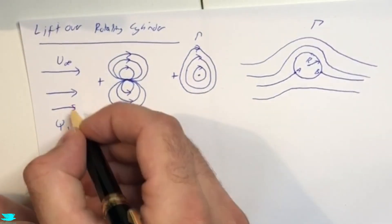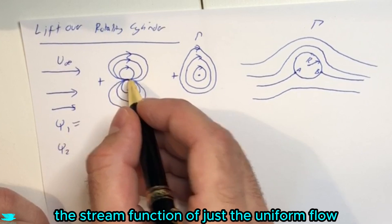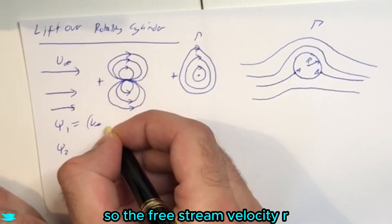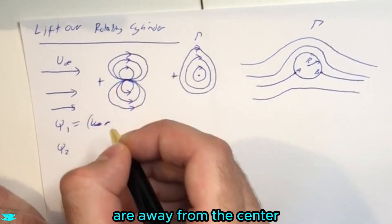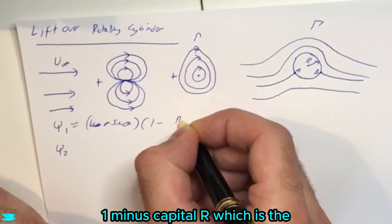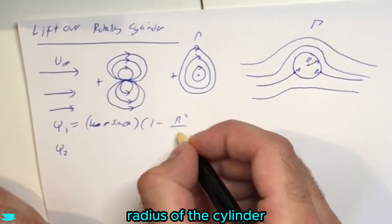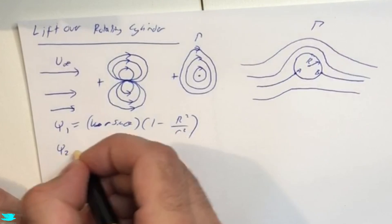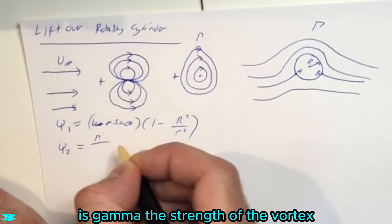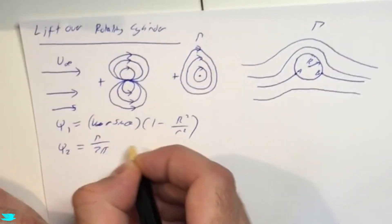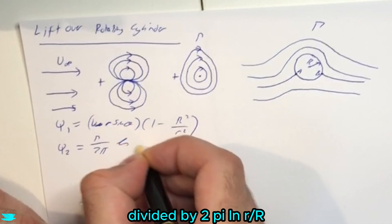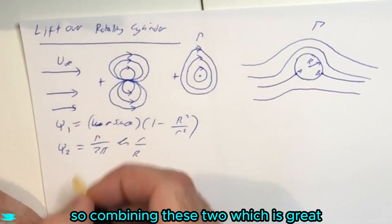So first of all, the stream function of just the uniform flow and the doublet from last video was V infinity, so the free stream velocity, R, which is the distance you are away from the center, sine theta, this is in polar coordinates by the way, one minus capital R, which is the radius of the cylinder, divided by little r squared. Now, Psi 2, which is for just the vortex by itself, is gamma, the strength of the vortex, the circulation, which we've covered in this video as well, divided by 2 pi, Ln, little r, on capital R.